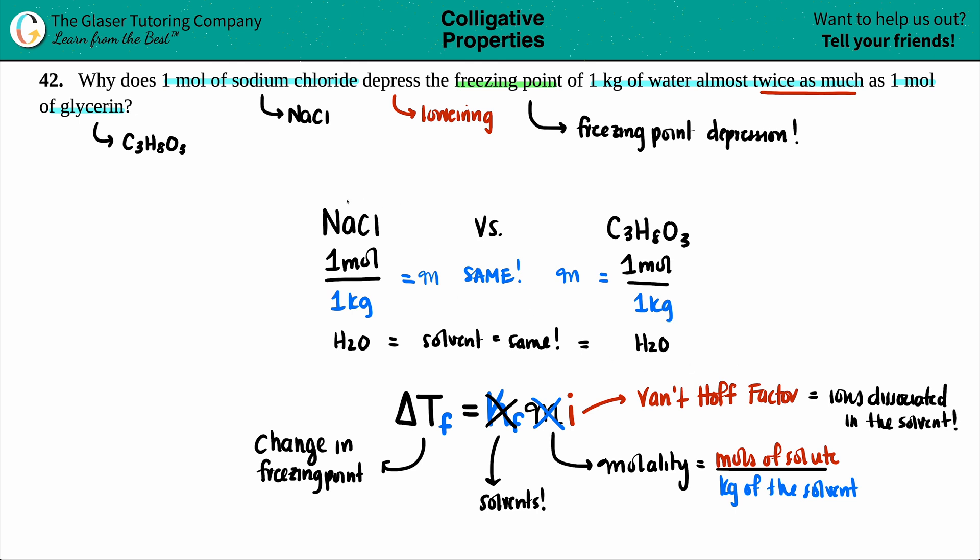Now in this case, NaCl, I got a metal and a non-metal, so this is an ionic compound. Ionic compounds love to dissolve in water. So NaCl will break down into Na plus and Cl minus. Now you have two ions. Na plus, that's one of them, and Cl minus. This is going to give us an i value of two.